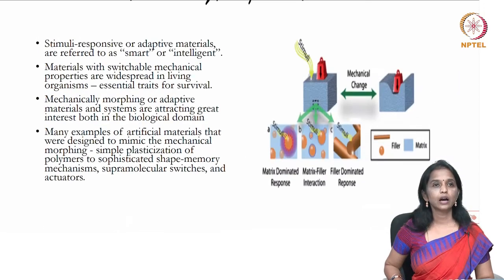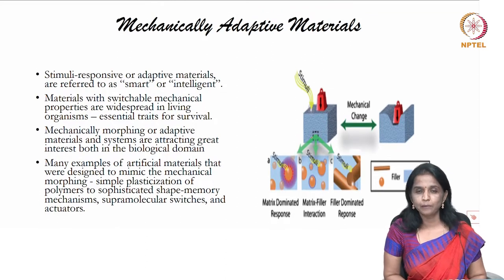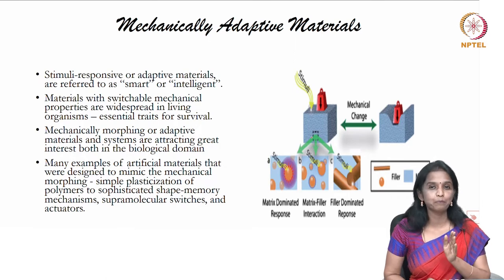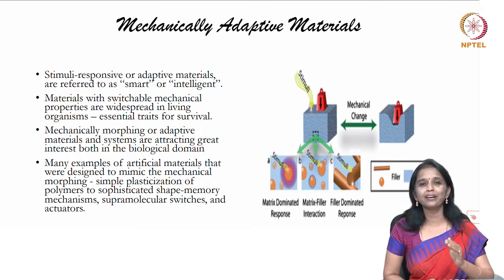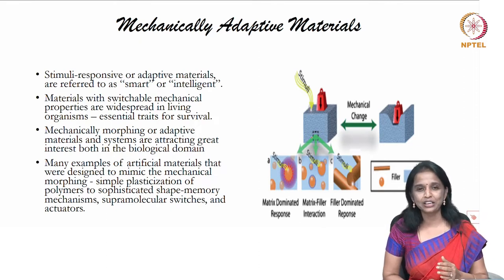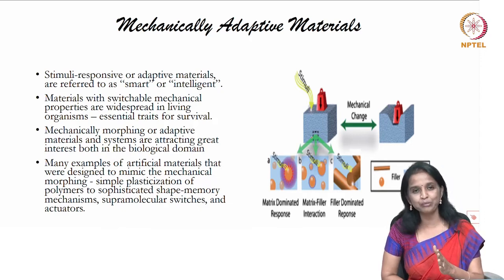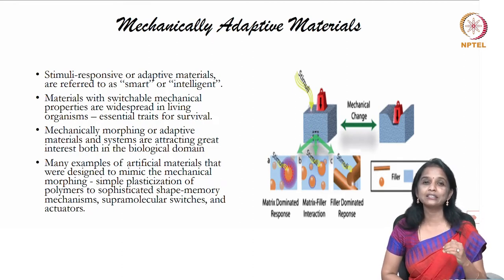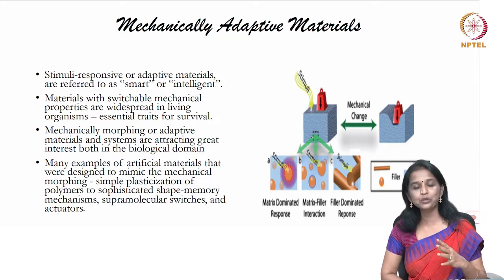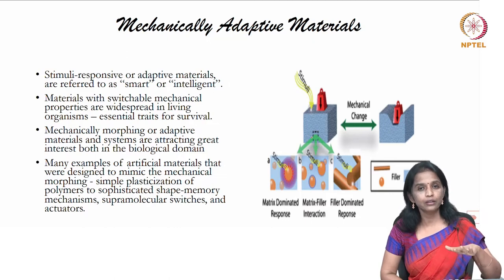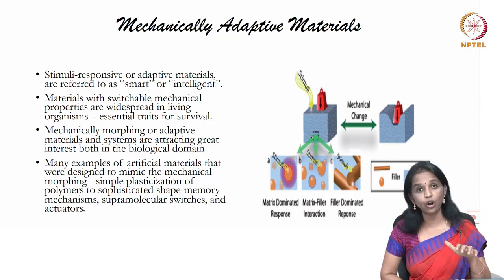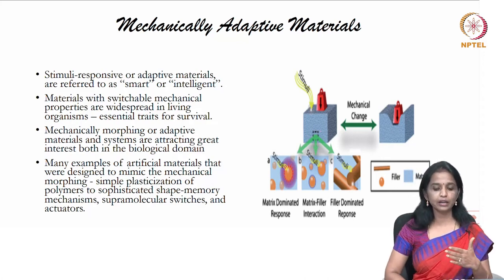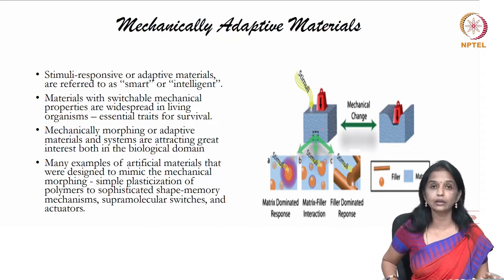The next important topic is mechanically adaptive materials. As the word indicates, when there is a physical or mechanical stimulus, if the material is able to adapt, that gives it a better survival edge — and this applies to anything. Your ability to adapt makes you more capable of surviving in any challenging environment. The same applies to material science. A material that can adapt and change its shape and structure in response to physical and mechanical stimuli will survive the challenge and help in creating biomedical devices.